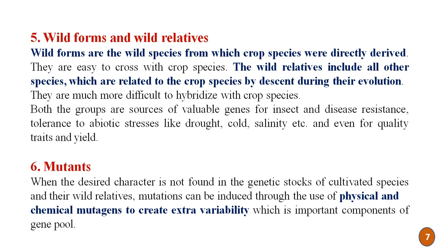Wild relatives may be more difficult to hybridize with crop species due to their evolution patterns. Both groups are sources of valuable genes for insect and disease resistance, tolerance to abiotic stresses like drought, cold, and salinity, and even for quality traits and yield. The sixth type is mutants. When the desired character is not found in genetic stocks of cultivated species and their wild relatives, mutations can be induced through physical and chemical mutagens to create extra variability, which is an important component of the gene pool.